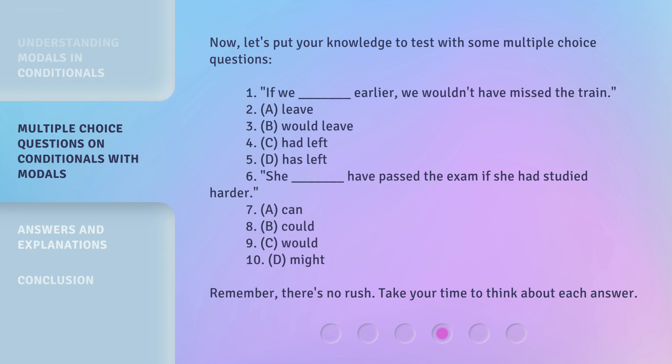Now let's put your knowledge to the test with some multiple choice questions. Question 1: 'If we _____ earlier, we wouldn't have missed the train.' A. Leave. B. Would leave. C. Had left. D. Has left.